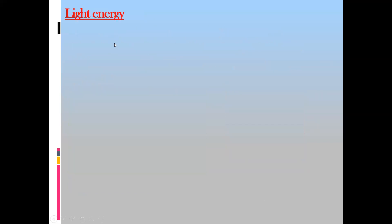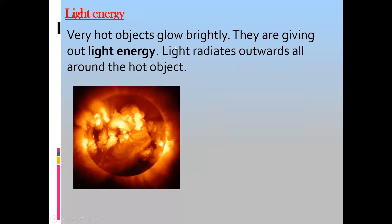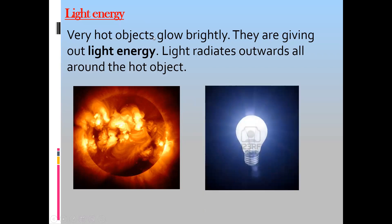Next is light energy. Anything that glows or emits light is said to have light energy. The sun, for example, produces light — so we receive light energy from it. The sun also produces heat, so it has heat energy as well.